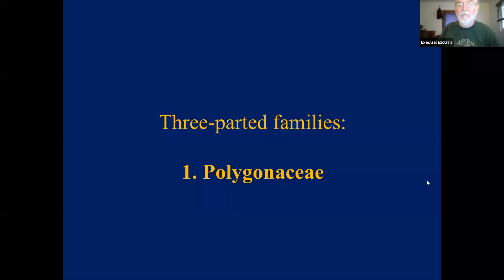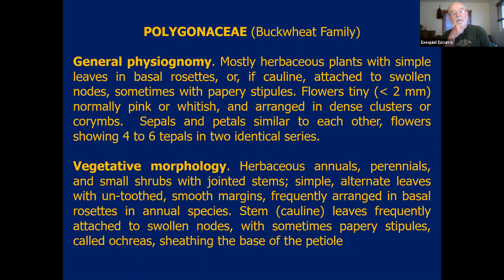Let me start the slide presentation with the first group in the three-parted families: the Polygonaceae. The Polygonaceae is a group of plants that belongs in the dicotyledon group, also known as the buckwheat family. They're mostly herbaceous plants, although there are a couple of examples of small trees. Leaves are often basal rosettes. Very often the leaves on the stem are attached to swollen nodes. The nodes of the Polygonaceae are swollen, sometimes covered with papery stipules known as ocreas.